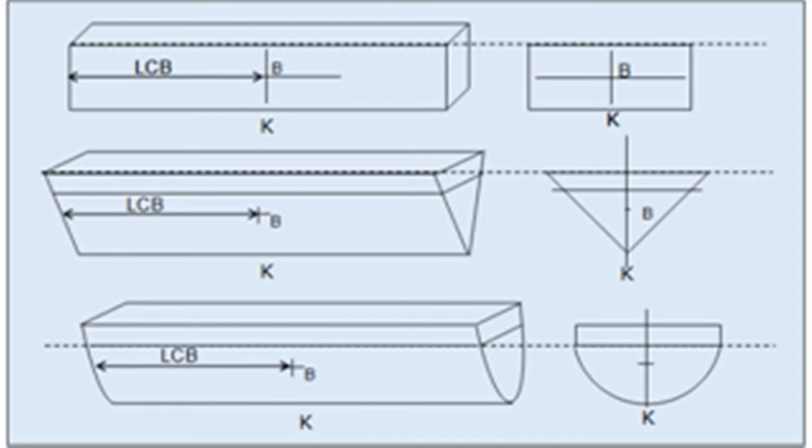Hello, this is Captain Chaudhary. I want to do some basic stability calculations with you today. We will be talking about finding out KB and LCB. KB is the vertical distance between the keel and the center of buoyancy, and LCB is the longitudinal distance between the aft perpendicular and the center of buoyancy.